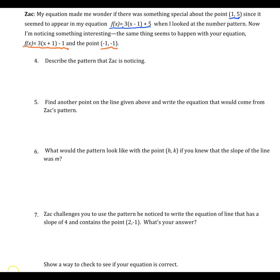So then Zac noticed, my equation made me wonder if there was something special about the point (1, 5) since it seemed to appear in my equation, f(x) equals 3 times (x minus 1) plus 5, when I looked at the number pattern. Now I'm noticing something interesting. The same thing seems to happen with your equation, f(x) equals 3 times (x plus 1) minus 1, and the point (negative 1, negative 1).